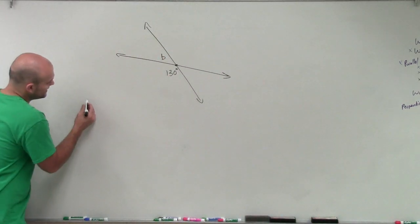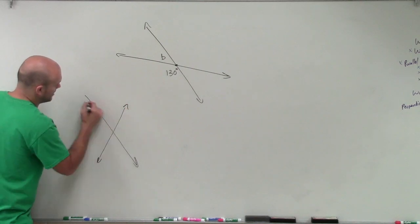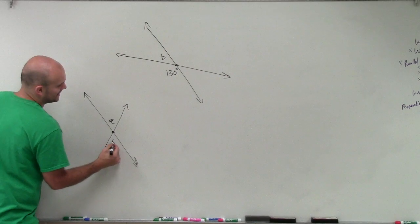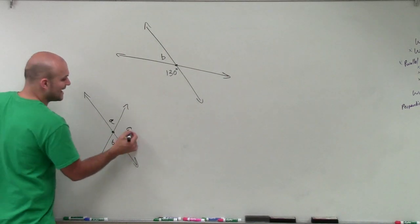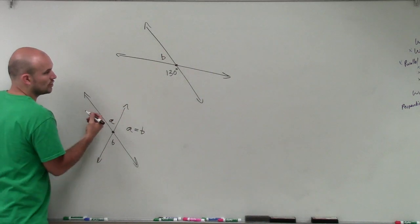So the first one is when we have an intersection of lines, we need to start thinking about some definitions that come up. When we have intersecting lines, if I have A and B, they intersect. I know that A is going to be equal to B. These are what we call our vertical angles.